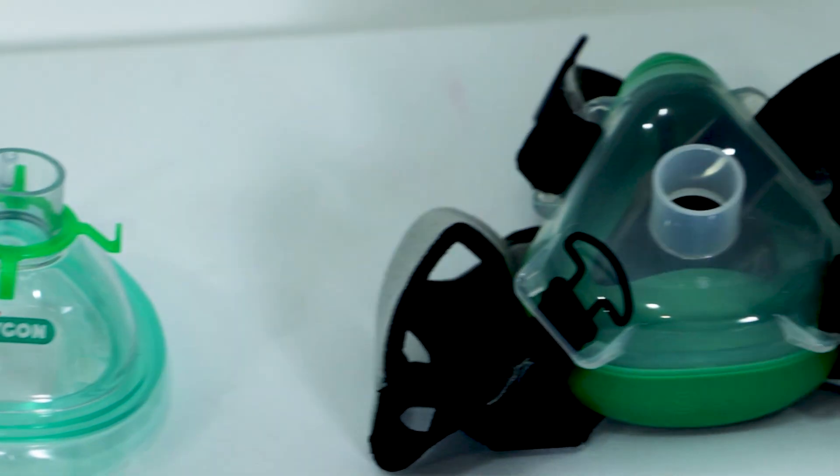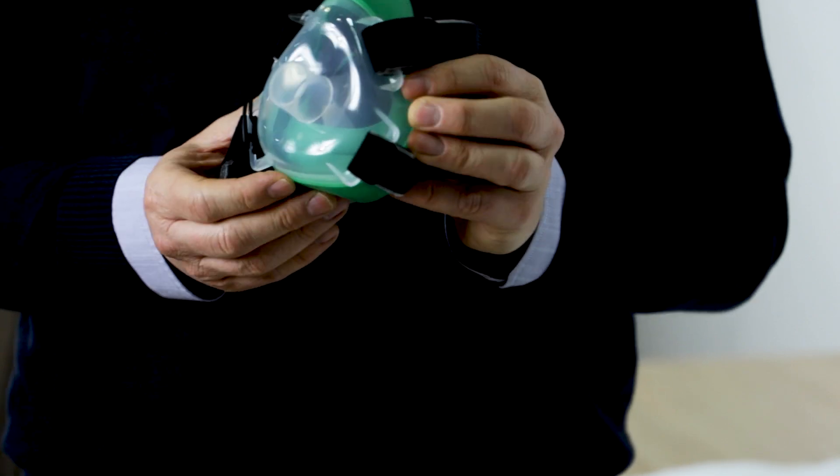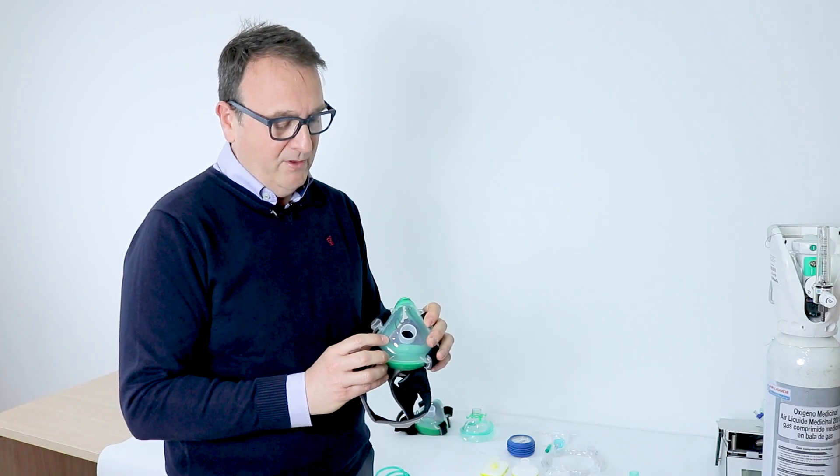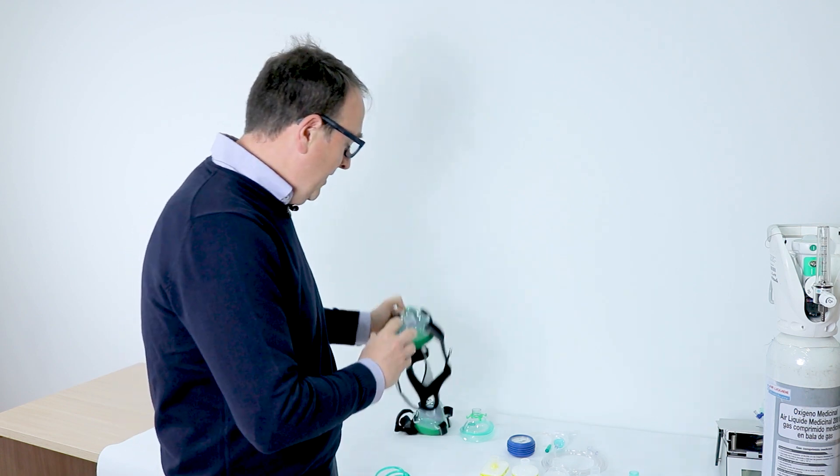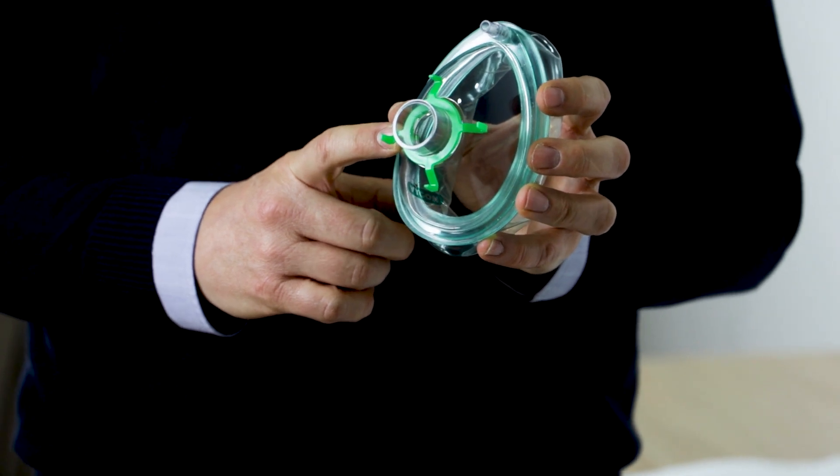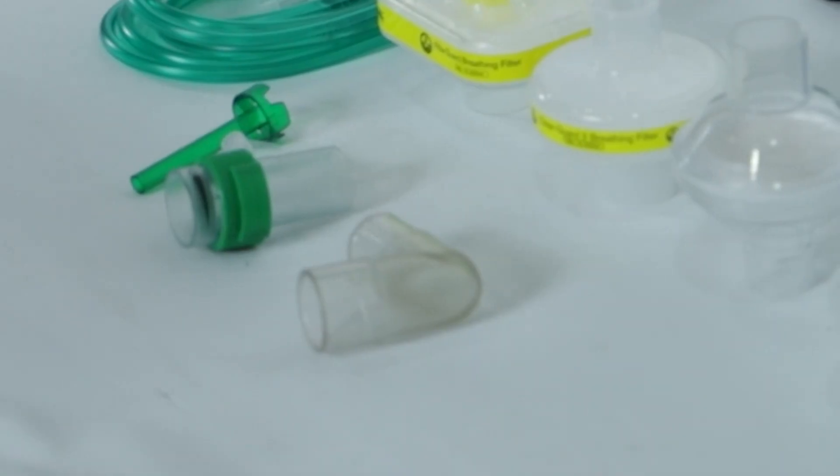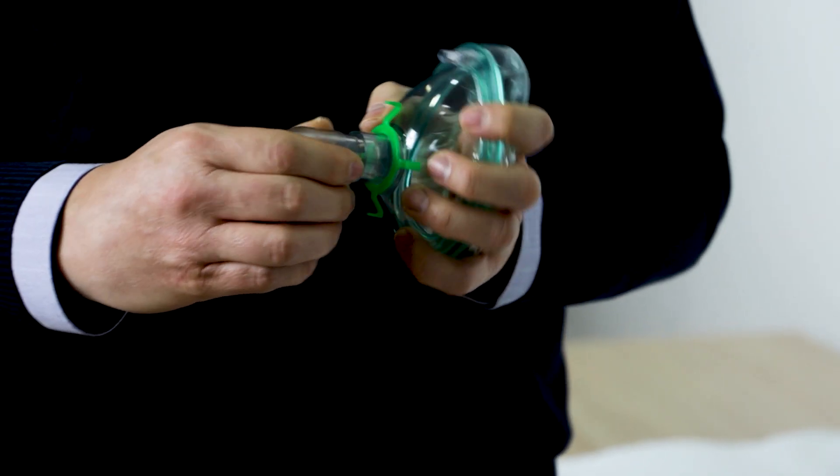First of all, I'm going to show you how to assemble the filters in the Boussignac CPAP systems. The first step is to choose the face mask. We can choose whichever. This face mask is a very comfortable valve face mask for the Boussignac valve, or we can use this one that is available in some European countries. The first step is to fit the elbow. We are going to put here the elbow. It's an ergonomic elbow.